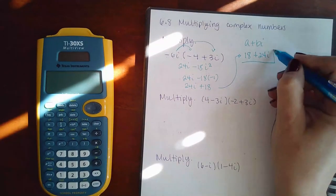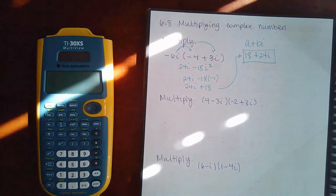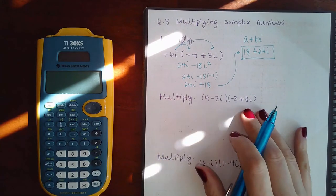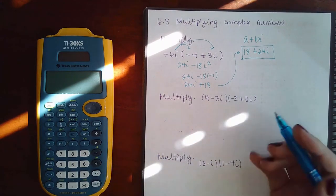And this is what they will want in the answer box for ALEKS. Now for this example we have a binomial times a binomial, so we will have to FOIL this one out.